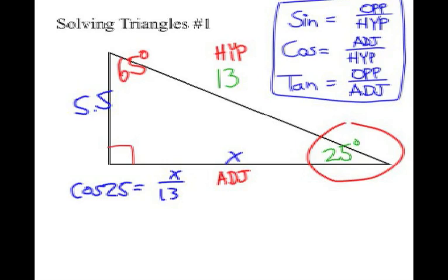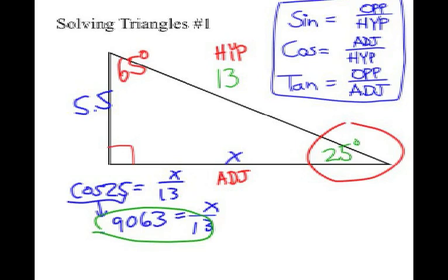Find the cosine value, which is 0.9063, multiply by 13 to get our answer. The horizontal leg is 11.8.